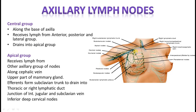From the apical group they form a subclavian lymph trunk and drain by two methods: on the left side it drains into the largest lymphatic duct — the thoracic duct; on the right side it drains into the right jugular lymph trunk at the junction of the internal jugular vein and the subclavian vein. The intercostobrachial nerve — that is the second thoracic nerve T2 — crosses through the axilla and comes to supply the medial side of the upper part of the arm. If the lymph nodes are enlarged, they might compress this nerve and you might feel referred pain over the medial side of the upper arm.